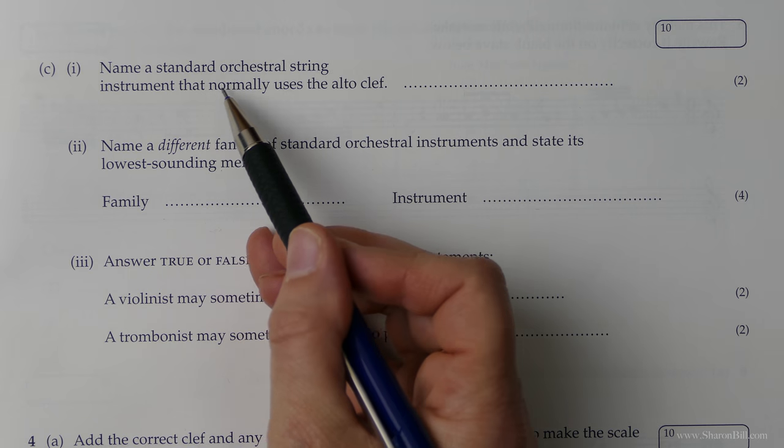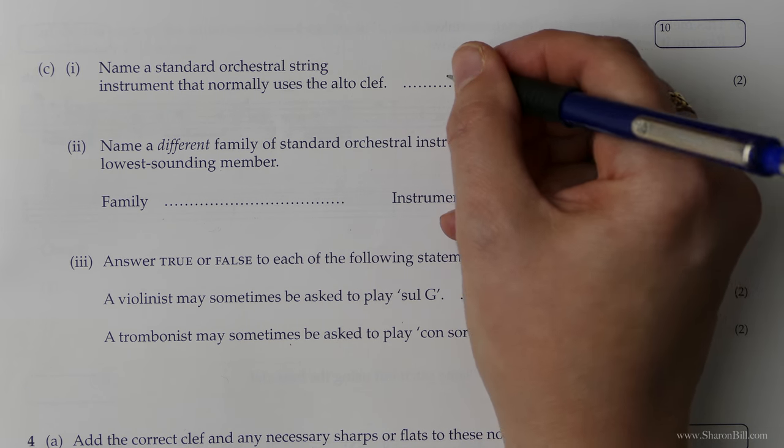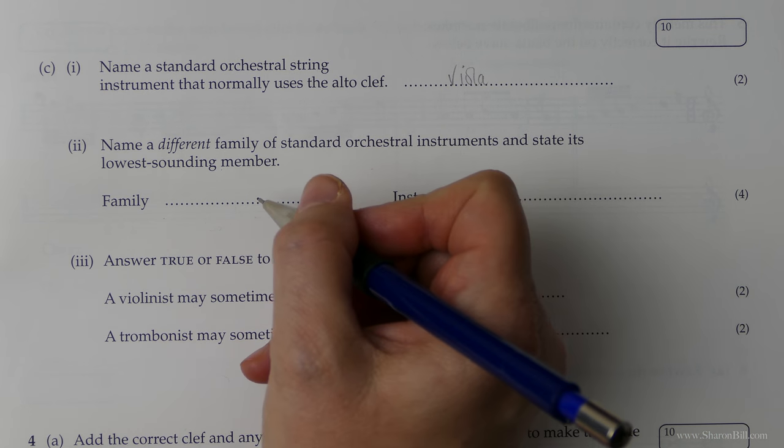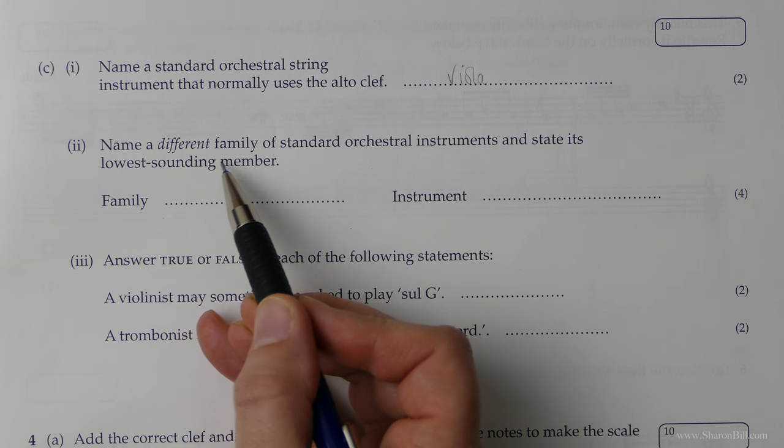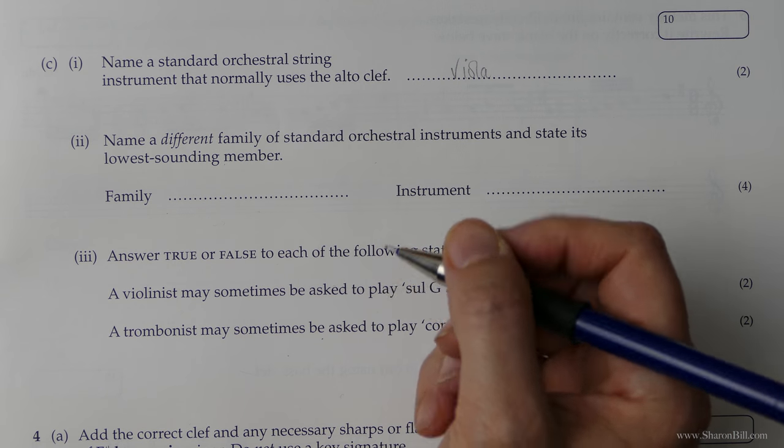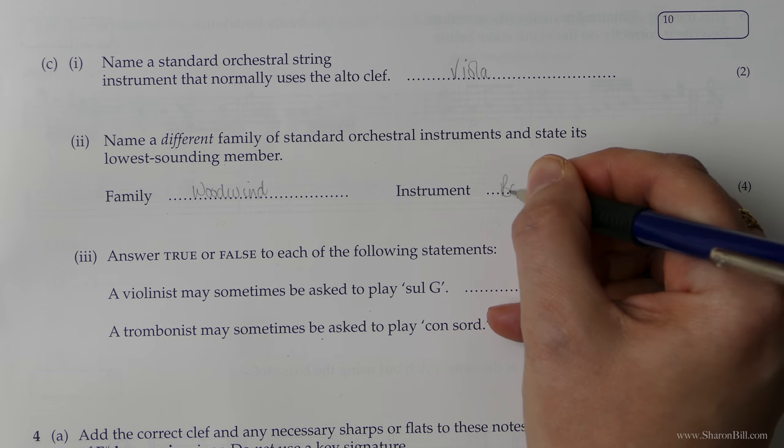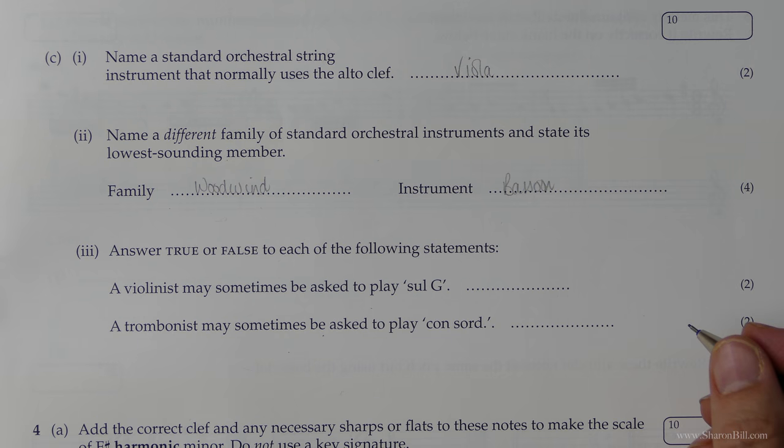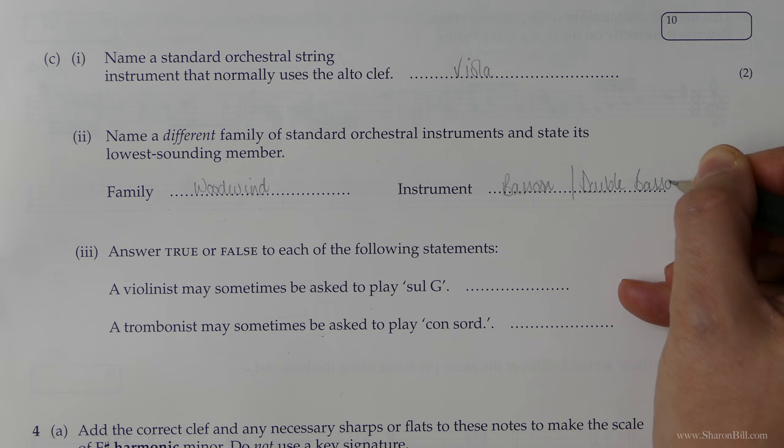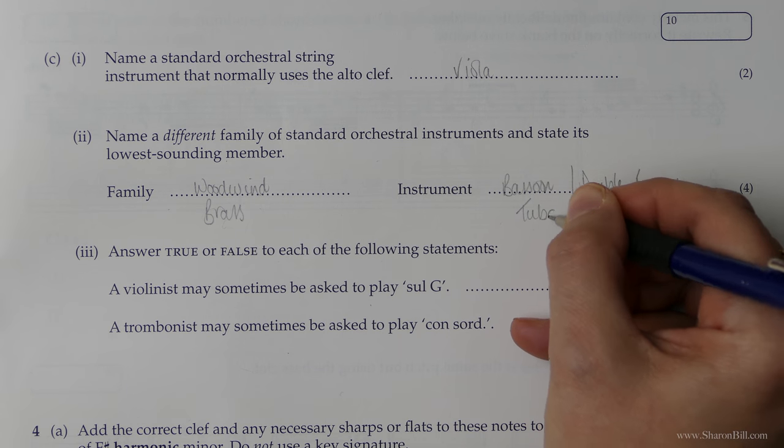Name a standard orchestral string instrument that normally uses the alto clef. Well, we know that's the viola, a slightly deeper instrument than the violin. Name a different family of standard orchestral instruments and state its lowest sounding member. If we chose woodwind, the lowest instrument would be bassoon, or the double bassoon. Either will be acceptable. If you chose brass, the lowest instrument is the tuba. Answer true or false to each statement. A violinist may sometimes be asked to play sol G, which means on the G string, so yes. And a trombonist may sometimes be asked to play con sord, that's with the mute, so yes.